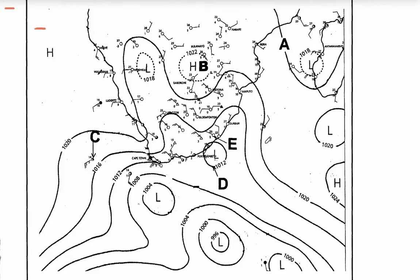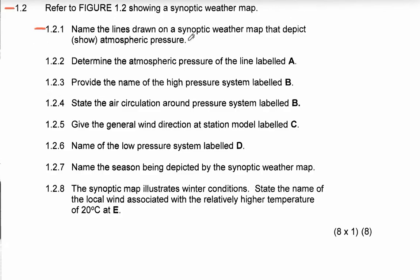Let me first explain contour lines. Contour lines show us the altitude — whether the land is elevated or flat. If contour lines are close to each other, they show mountainous or hilly areas; if they are far apart, they show flatland. Now, the lines on a synoptic weather map show atmospheric pressure — either the pressure is low or high — and these lines are called isobars. That answers question 1.2.1.